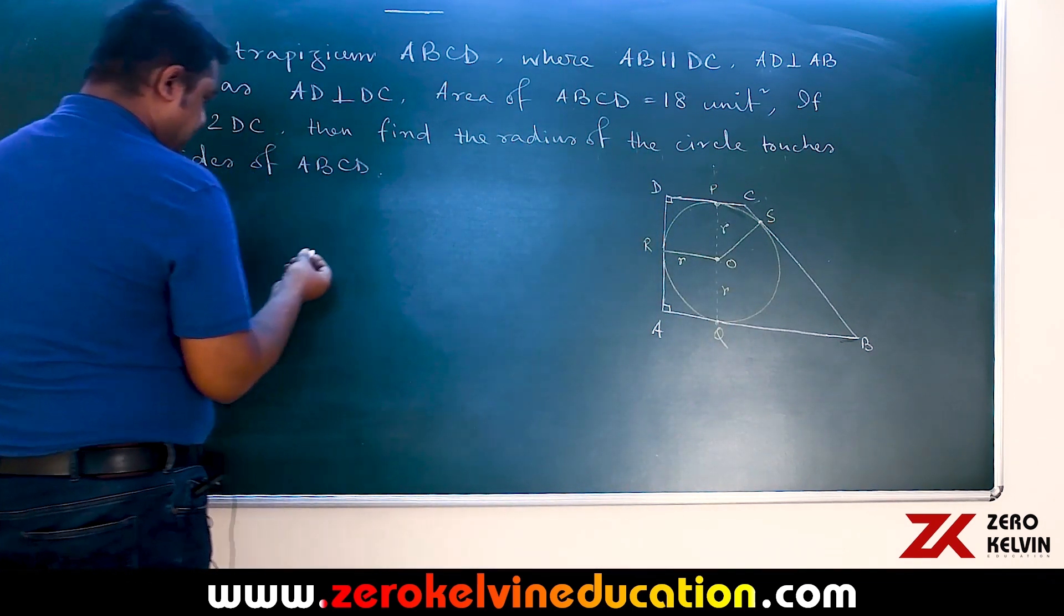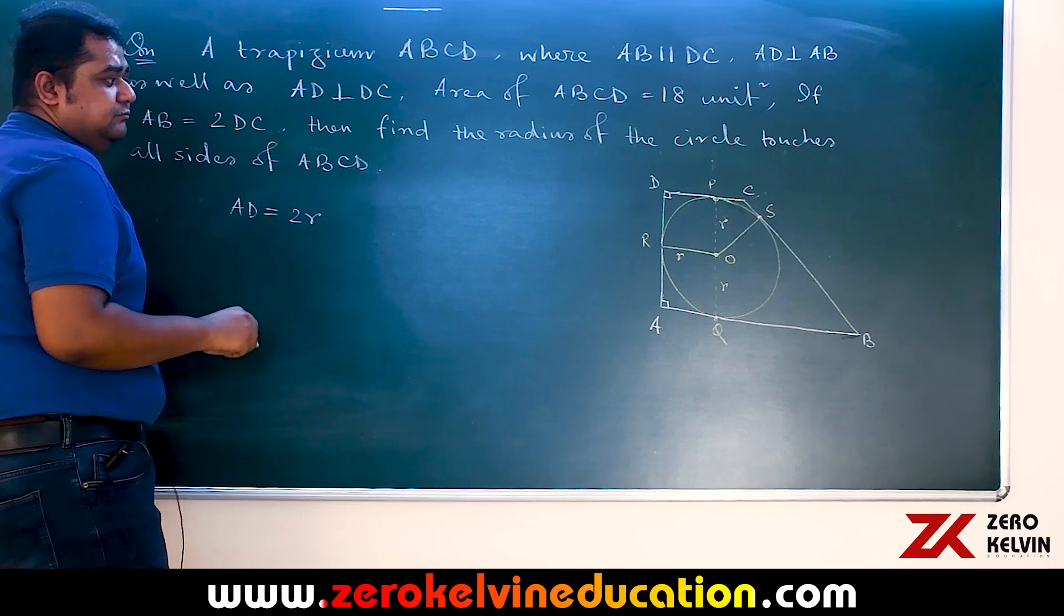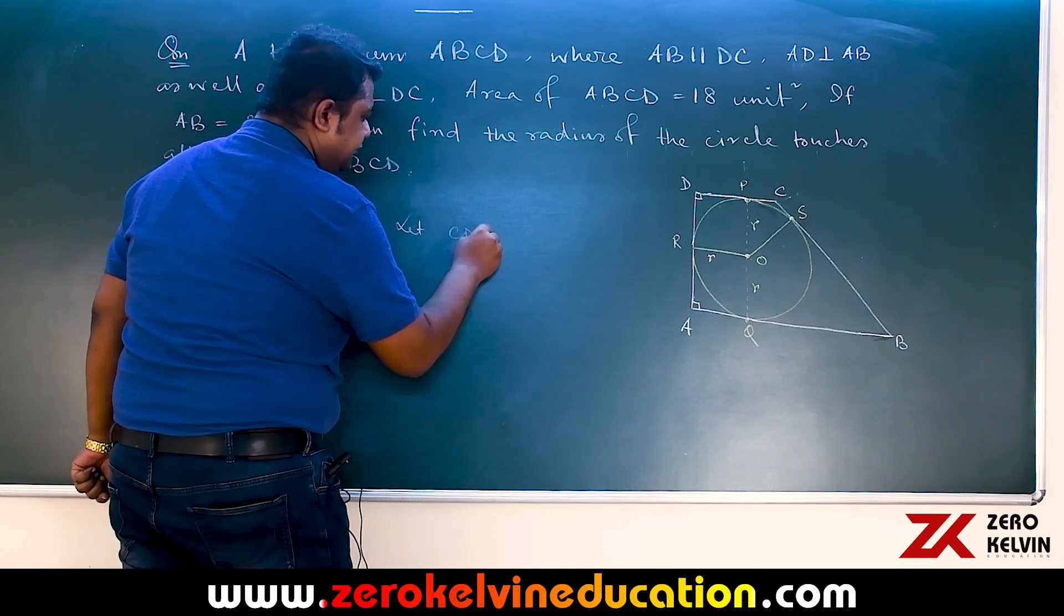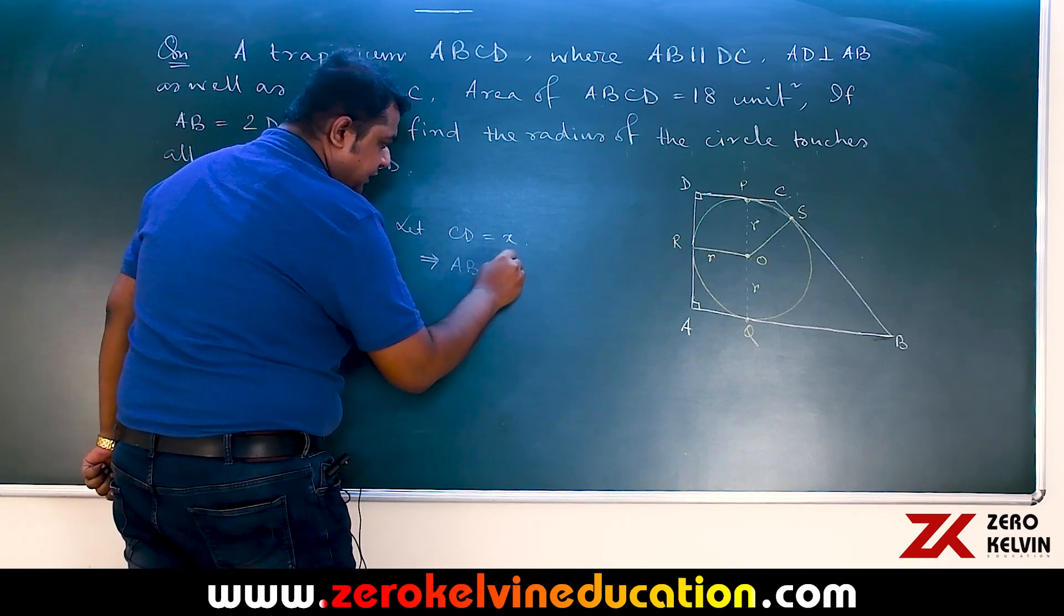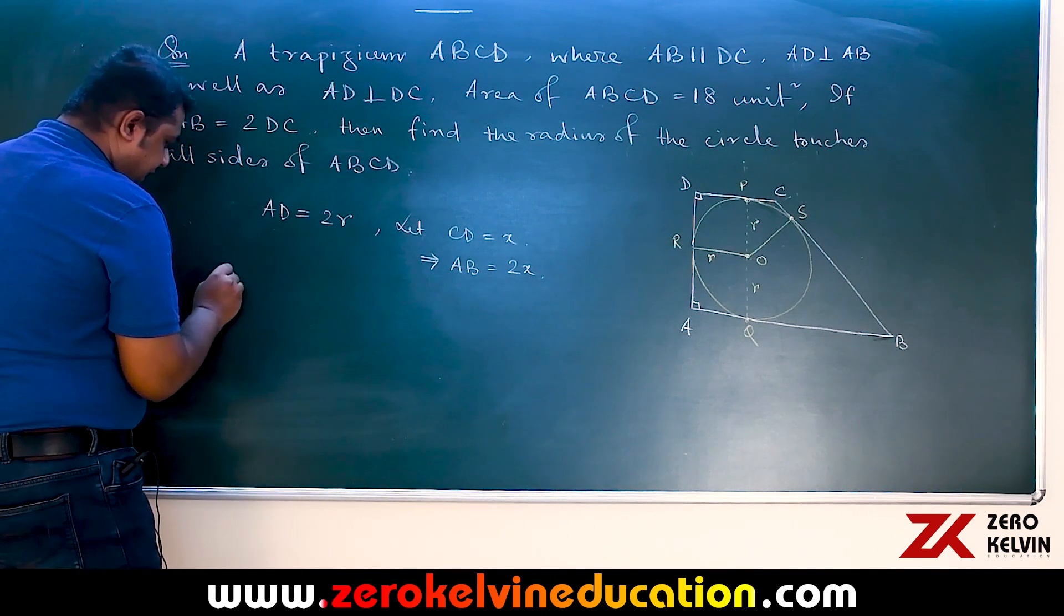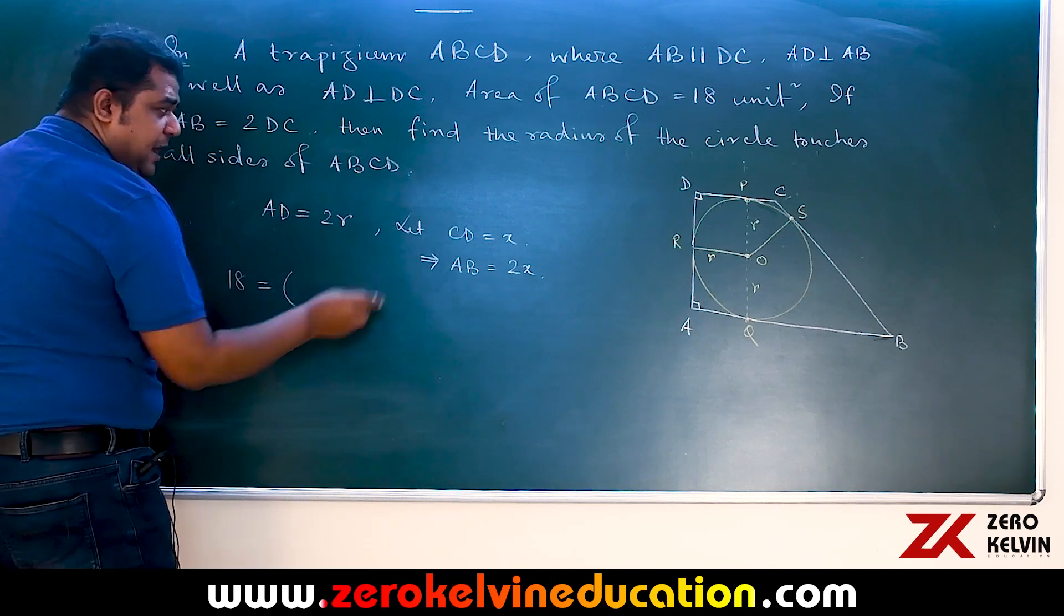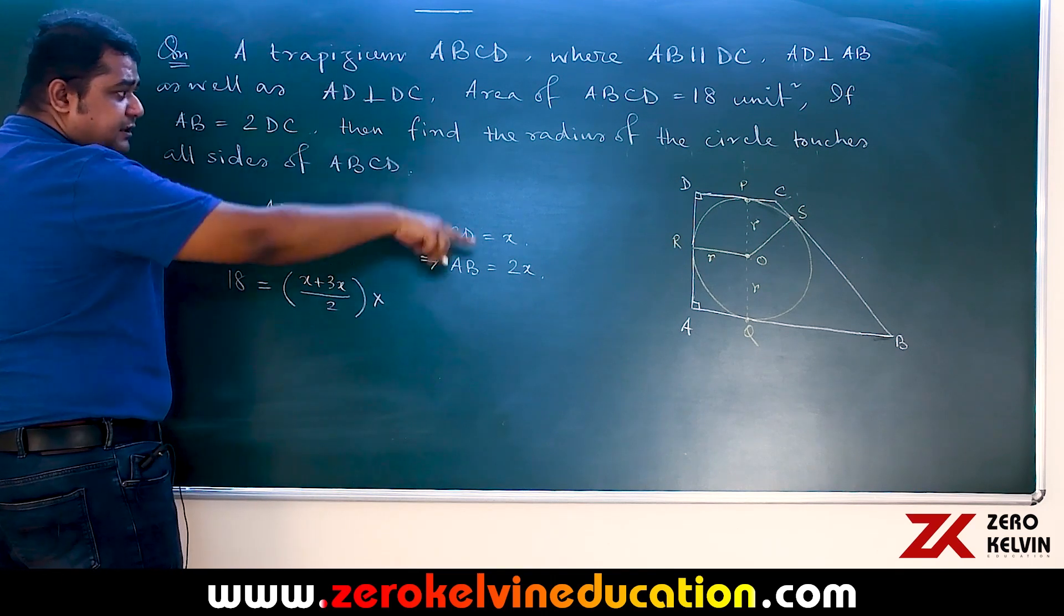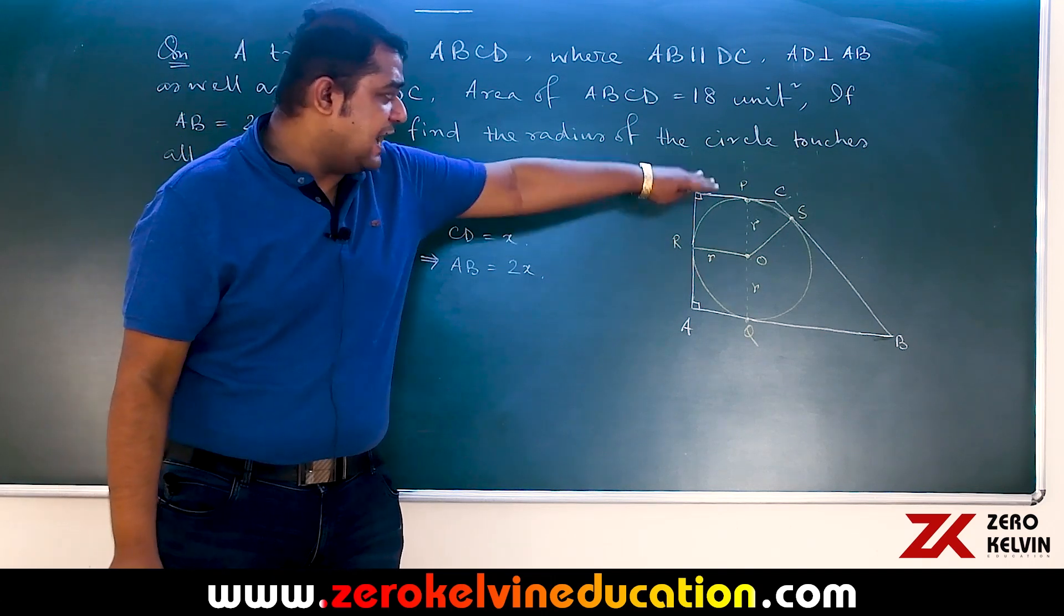As per the diagram drawn, AD is appearing to 2R which is the diametric length. So let us consider CD is of length x unit. That confirms AB which is double in length must be of length 2x units and hence area of the trapezium which is 18 unit square must be average of the parallel sides multiplied with the height or the parallel distance between the sides which is same as the length of AD or diameter of the circle.